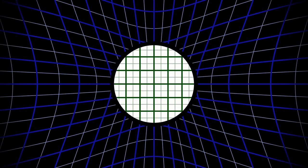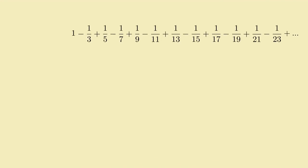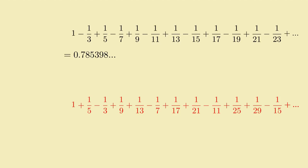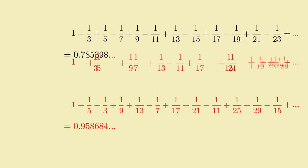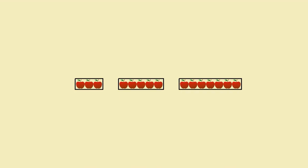How is this possible? We took the series 1 minus a third plus a fifth and so on, rearranged the terms in the pattern plus plus minus plus plus minus, and got a new series whose sum was clearly different from what we started with. This seems to indicate that you can rearrange the order you add up numbers and get a different answer — which is in complete defiance of all our intuitions about how adding works. I mean, if you have three apples, five apples, and seven apples, all in separate containers, you have 15 apples total, regardless of whether you add them up as 3 plus 5 plus 7, or 7 plus 3 plus 5, or whatever other order you want.